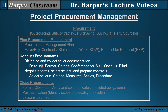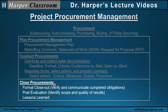Conduct procurements: distribute and collect seller documentation, including the deadline, format, criteria, conference versus mail procedures, open versus blind, and negotiate terms, select sellers, and prepare contracts. In selecting sellers, we look at the criteria, measures, scales, and different procedures for evaluating and selecting vendors to award a contract. Closed procurements: a formal closeout where we verify and communicate completed obligations, post evaluations, identify the scope and quality of results, and finally, lessons learned.